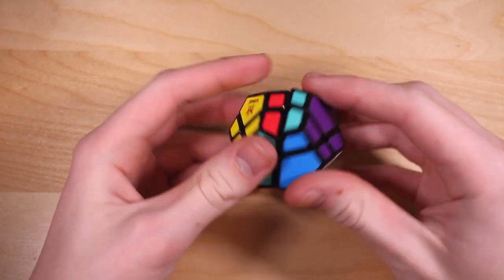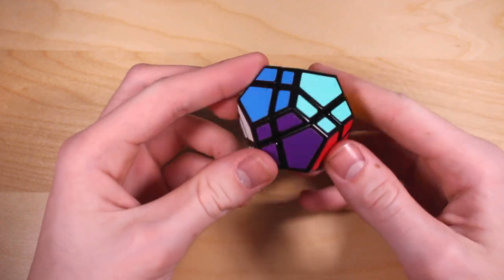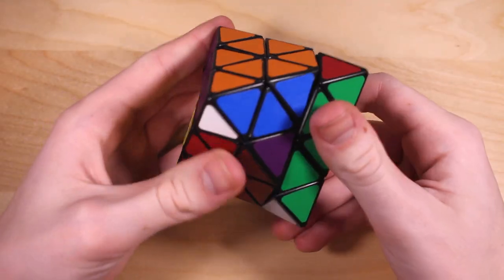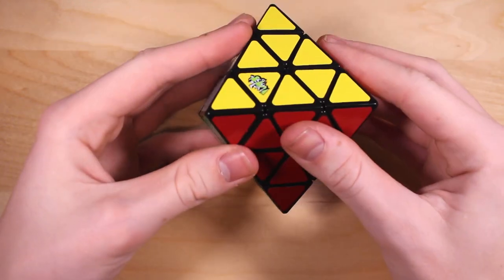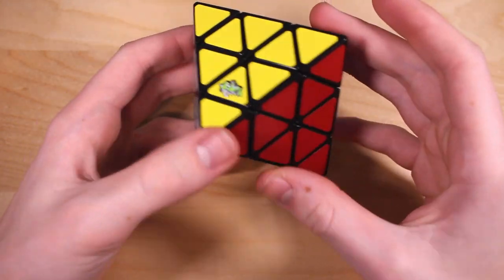Now on to non-WCA puzzles. These are in no particular order. Meffert's Mini Skewb Ultimate. This turns very well and proved to be quite challenging to solve. Lan Lan Face Turning Octahedron. When I first got this, I couldn't solve it. I came back to it several months later and I was able to figure it out. Felt really good.